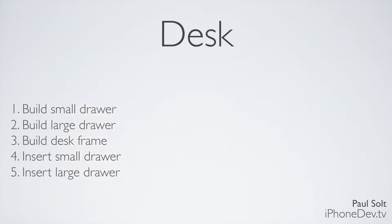When we look at this desk example, there are going to be five different steps in an abstract way. We need to build the small drawer, then the large drawer, then we need to build the desk frame, and then we can insert the drawers into the desk. And then we have a desk that we can put in your office or your bedroom. If we could teach a computer to do these same steps, we would be able to manufacture desks in an assembly line and write a computer program to do something like that. So that's the idea of a function.